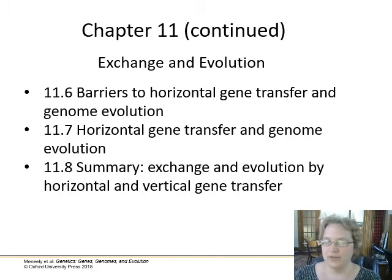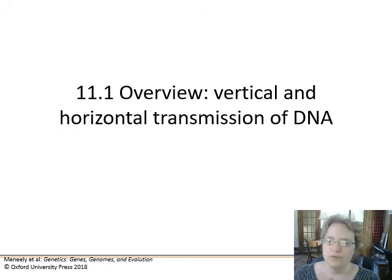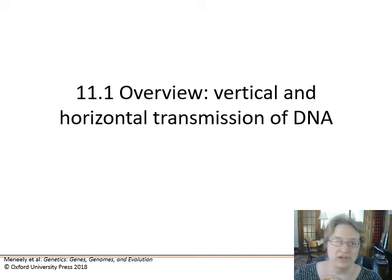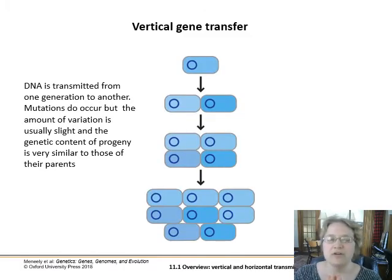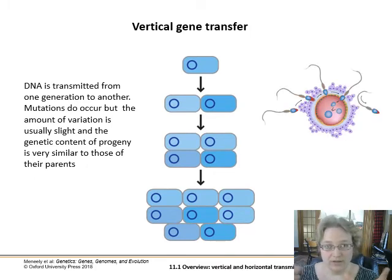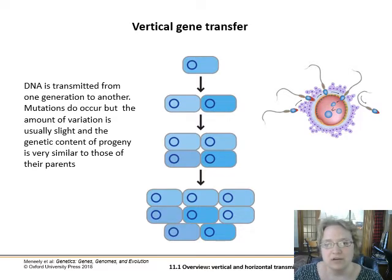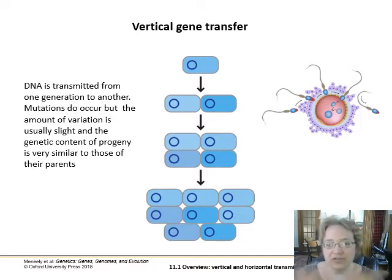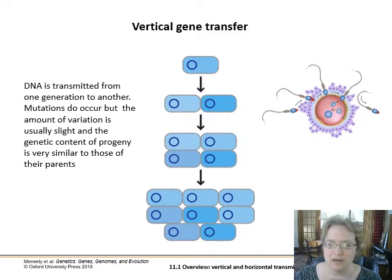Here's the other half of the chapter summary and our overview. We've talked a lot about vertical transmission up until this point, and we're going to start talking about horizontal transmission of DNA. Vertical gene transfer is when DNA is passed from one generation to another — either through mitosis, where cells divide via asexual reproduction, or through meiosis, where gametes from the mother and father combine, fertilize, and become a new embryo or zygote. The genetic content of the progeny is very similar to that of the parents.